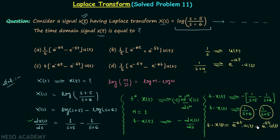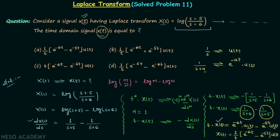We have the negative sign between the two Laplace transforms, and by the linearity property, when two Laplace transforms are subtracted we subtract the corresponding time domain signals. But we need X(t), not t·X(t). So we divide both sides by t, giving X(t) = (1/t)·[e^(-6t) - e^(-5t)]·u(t). Comparing with the four options, option A is the correct answer.